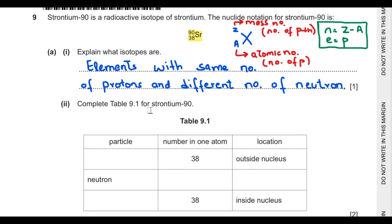Second question says complete table 9.1 for strontium-90. Here we have particles, number in an atom, and location. Outside the nucleus we only have electrons. The number of electrons is similar to number of protons. Protons are present inside the nucleus. Number of neutrons can be obtained by subtracting atomic number from mass number. 90 minus 38 gives 52 neutrons, and they are also present inside the nucleus.